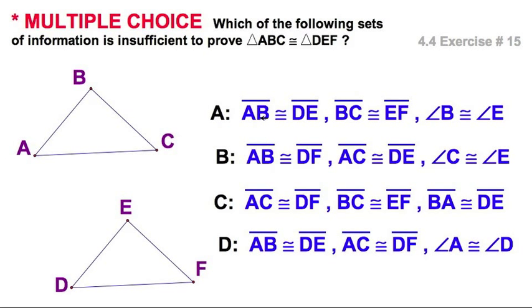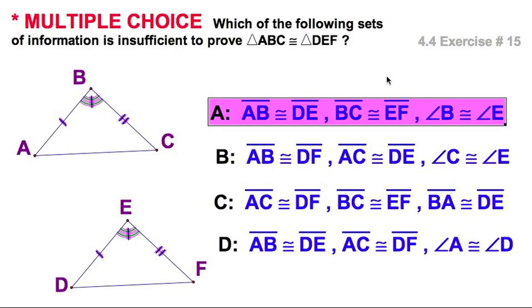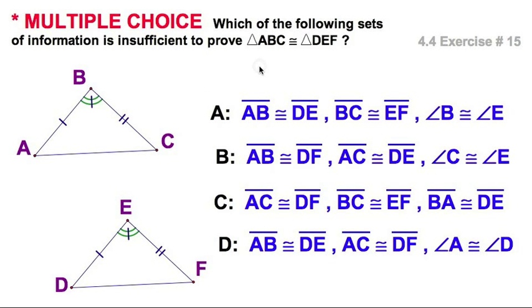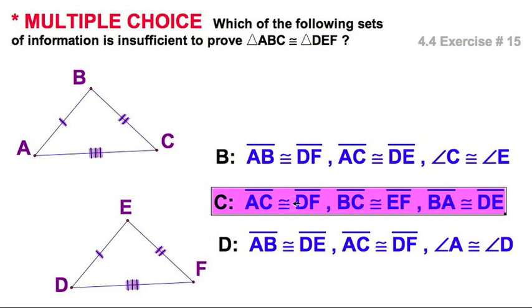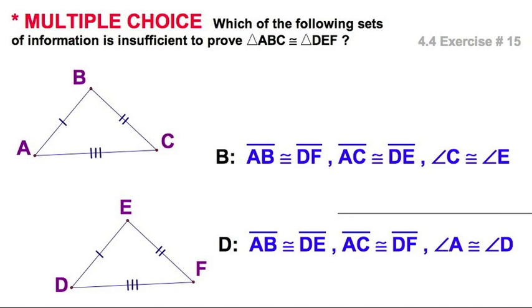Which of these four is insufficient to prove triangle ABC congruent to triangle DEF? We'll start with A. That looks like side-angle-side in anybody's book, so A is not a problem. I'll check out C now. Notice I skipped one. This one says I've got three pairs of congruent sides in the correct order. That's side-side-side. So we can get rid of C.